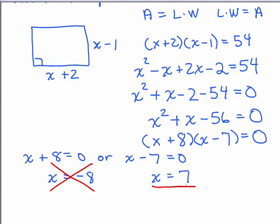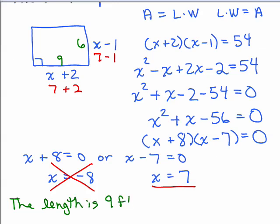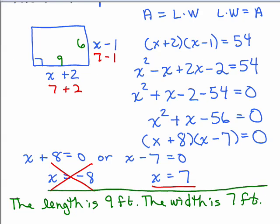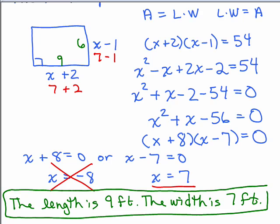If x is 7, you'd have 7 minus 1 and 7 plus 2, which works out. So x equals 7: the width is 7 minus 1 equals 6, and the length is 7 plus 2 equals 9. We wanted the area to be 54 square feet — 6 times 9 is 54, so it checks out. The length is 9 feet and the width is 6 feet.